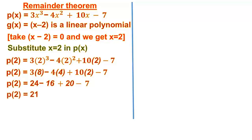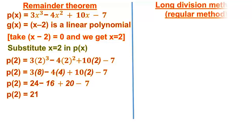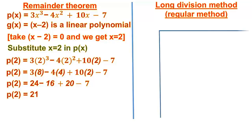Now, we are going to do it by the long division method. 3x cubed minus 4x squared plus 10x minus 7 is divided by G of x, the linear polynomial. We proceed with the long division.